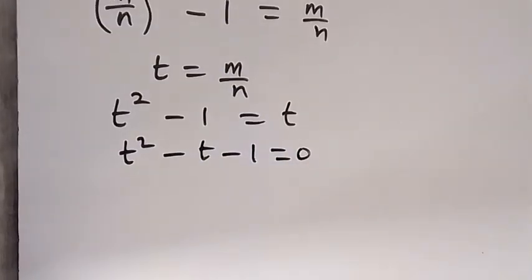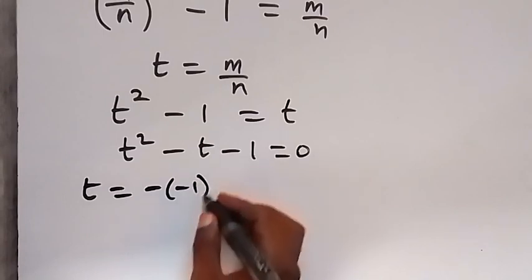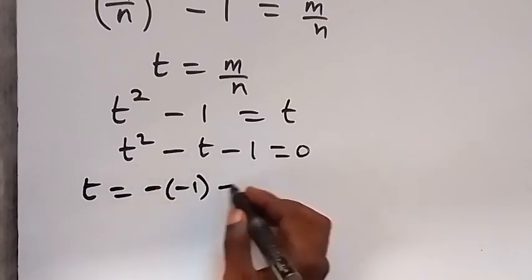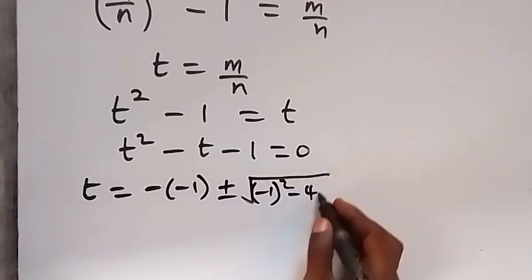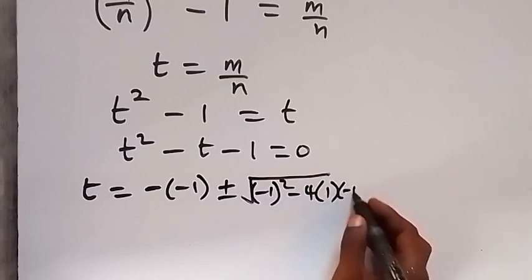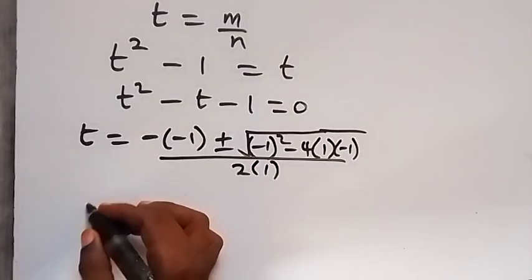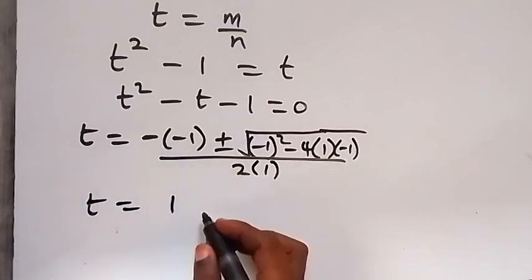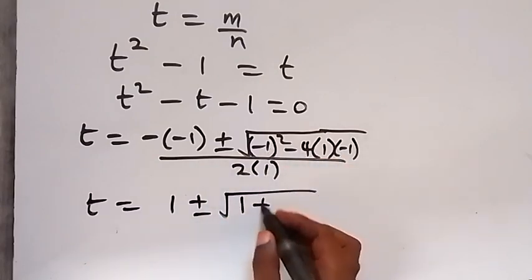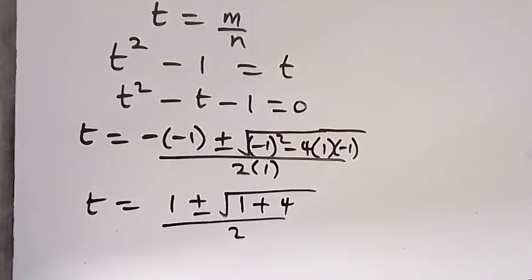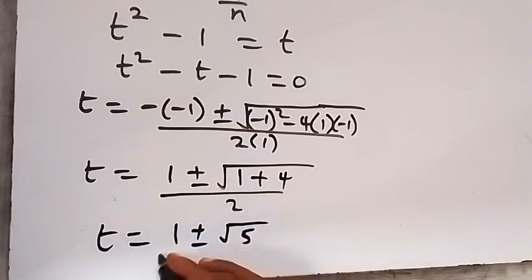Now solving this quadratic equation, we have t equals minus b — where b is minus 1 — plus or minus square root of b squared, that's minus 1 squared, minus 4a, that's 1, times c, that's minus 1, all over 2a, which is 2 times 1. This gives us t equals 1 plus or minus square root of 1 plus 4, over 2. So t equals 1 plus or minus square root of 5, over 2.